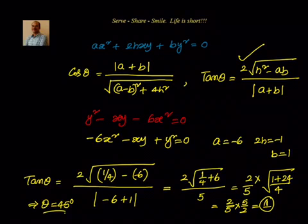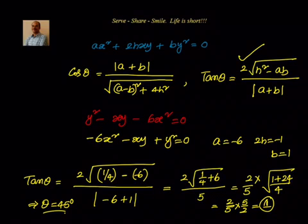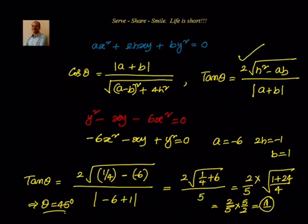So the angle between the pair of straight lines given by y² - xy - 6x² is 45°. In this session we understood how to find the angle between a pair of straight lines for a second degree homogeneous equation of the form ax² + 2hxy + by² = 0. The angle θ satisfies tan θ = 2√(h² - ab) / (a + b), or equivalently cos θ = |a + b| / √[(a - b)² + 4h²].